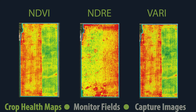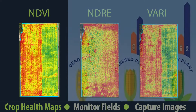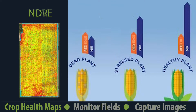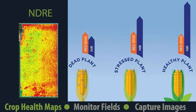There are different types of crop health maps that utilize different wavelengths of light and have different strengths for identifying stress. NDVI is useful for the beginning and middle of the season, but it can struggle to see through the top layers of your crops later in the season. NDRE is useful once your crops have developed a dense canopy, and is also a good option for permanent crops which have a dense canopy year-round.